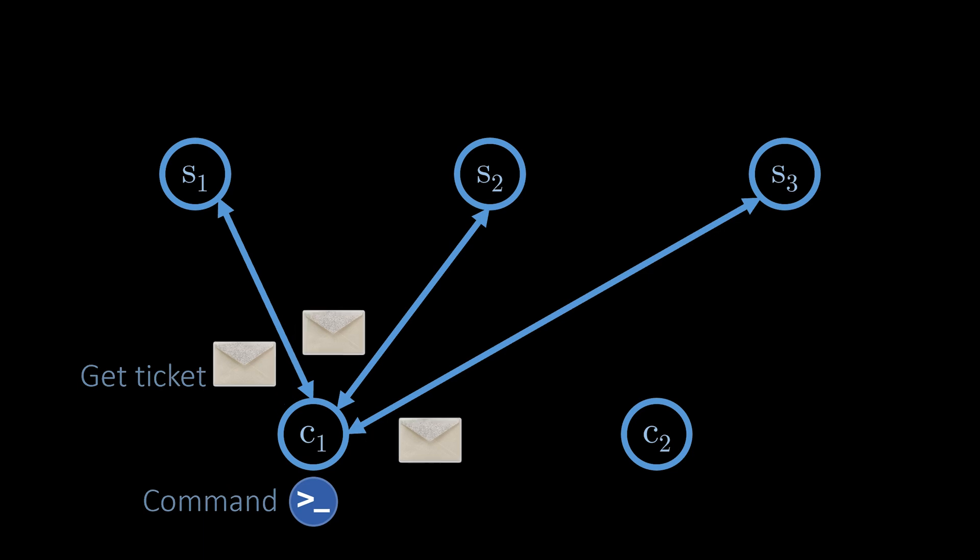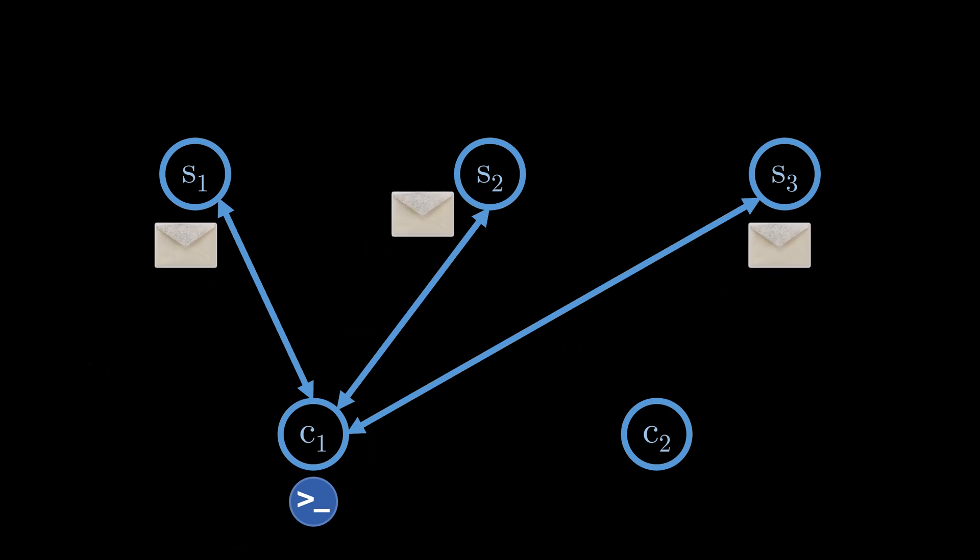The first step is to request tickets from the servers. We assume here that one of the servers fails to respond, which is okay because we only need tickets from a majority of servers.